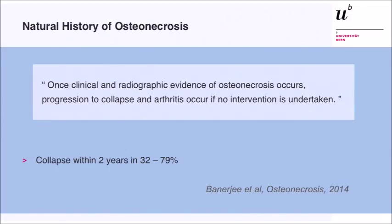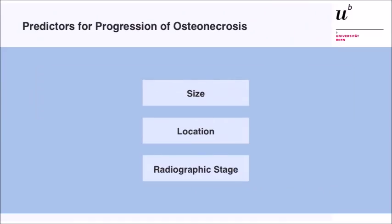When comparing the efficacy of treatments, you have to know about the natural history of the pathology. It's stated that once clinical and radiographic evidence of osteonecrosis occurs, progression to collapse and arthritis occurs if no intervention is undertaken. When you have a symptomatic hip and radiographic evidence on conventional imaging, collapse occurs within two years in 32 to 79 percent of all hips. The predictors for progression are the size and location of the lesion and the radiographic stage.